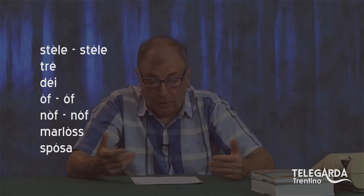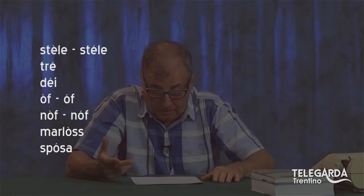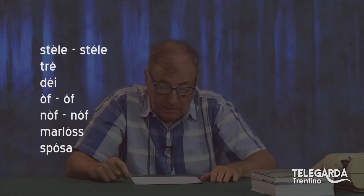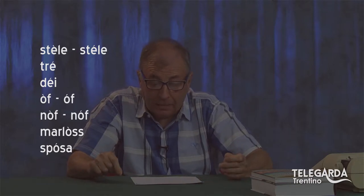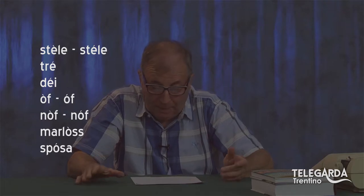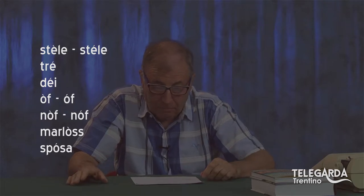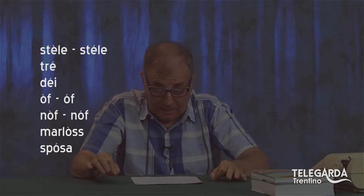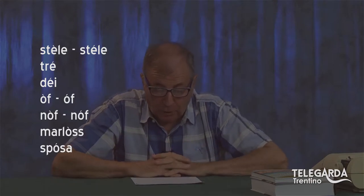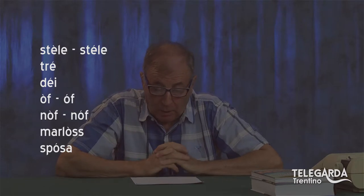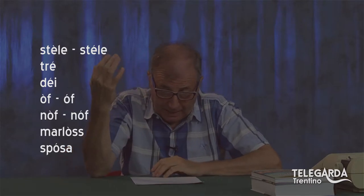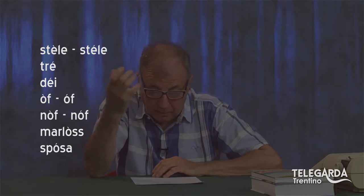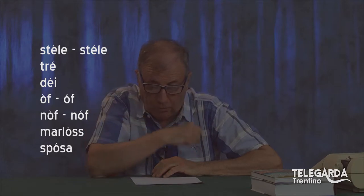In italiano diciamo l'aggettivo numerale tre, ma in dialetto diventa tré — ho comperato tré pene, tré matite, tré gomme — con l'accento fonico chiuso. Poi dei: le dita, non dei le divinità. Déi sono le dita, con accento fonico chiuso.